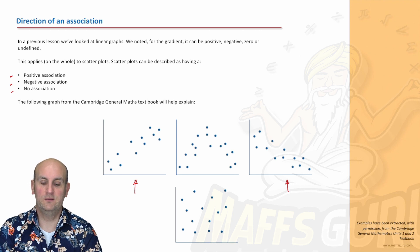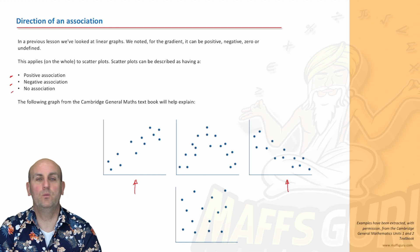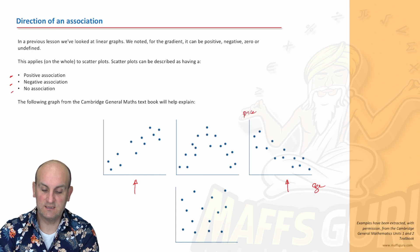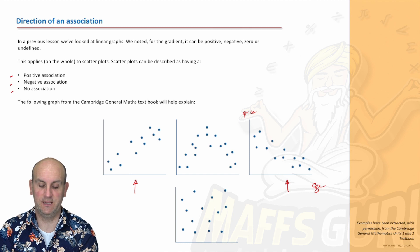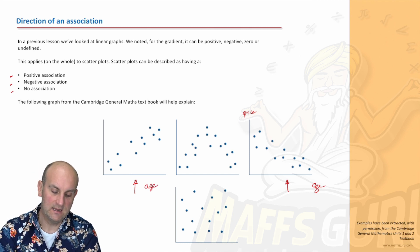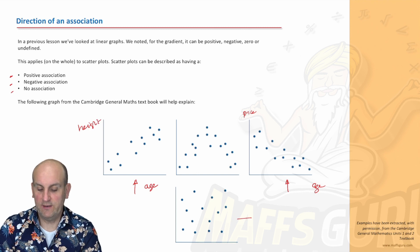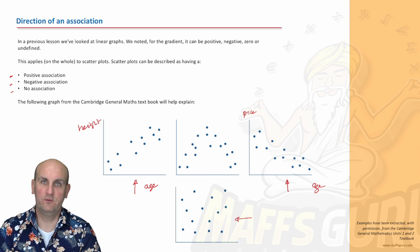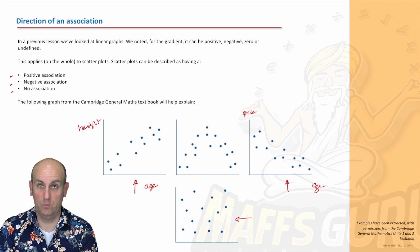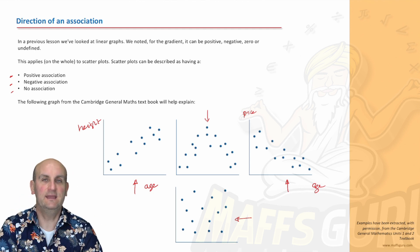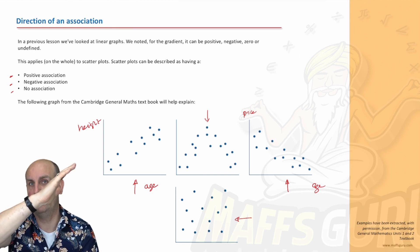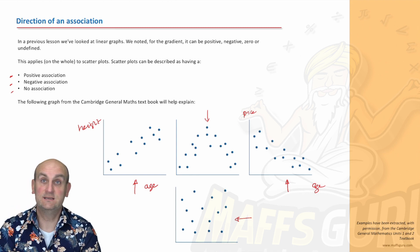If we look at this one, there is a negative association. One of the examples in the previous video was the age of a vehicle and its price — as a car gets older, it loses money, it depreciates. We could have had age and height as a positive example. This one here — can we see any pattern? None whatsoever, so that would suggest there is no association. And that curved one, believe it or not, is also no association — for positive they have to be going up, negative they have to be heading downwards.